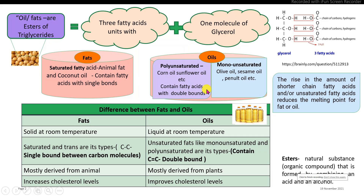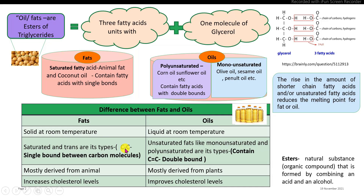The basic difference between fats and oils depends on the type of fatty acids contained in the triglycerides. If the triglycerides contain saturated fatty acids, then it is called a fat. If the triglycerides contain unsaturated fatty acids connected with glycerol, it is called an oil. The difference between saturated and unsaturated fatty acids is that unsaturated fatty acids contain one or more double bonds between carbon atoms, while saturated fatty acids contain only single bonds between carbon atoms.